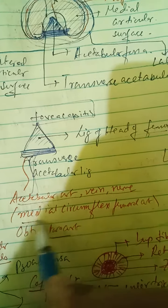Below this transverse acetabular ligament there lie the acetabular artery, vein, and nerve — that is, branches of the medial circumflex femoral artery and the obturator artery. These vessels pass below the transverse acetabular ligament and supply the acetabular cavity.